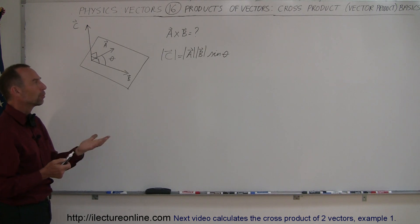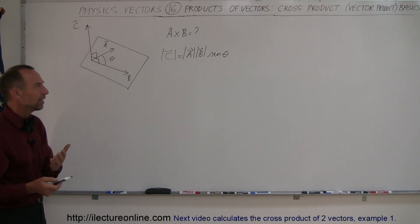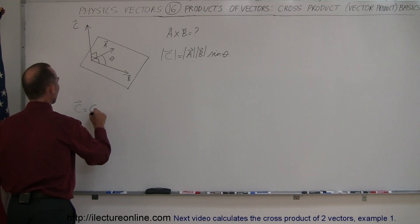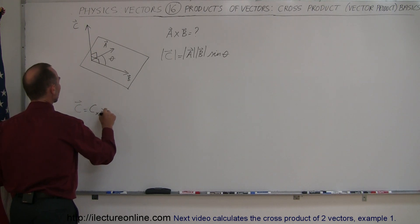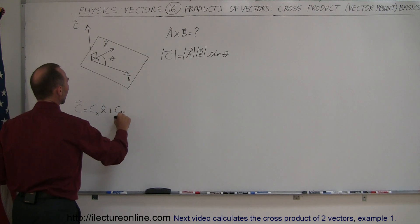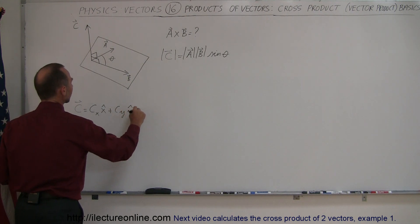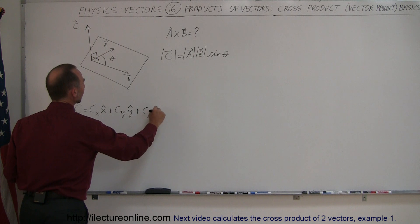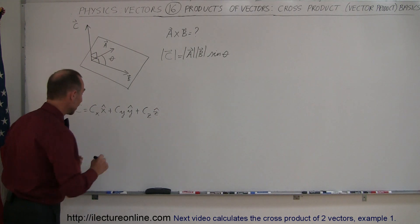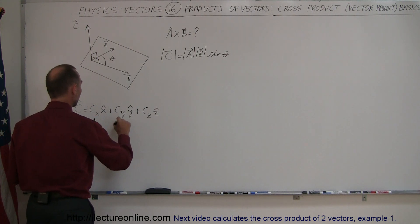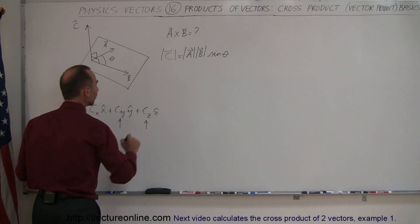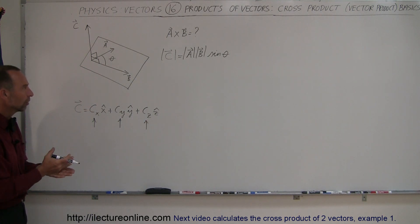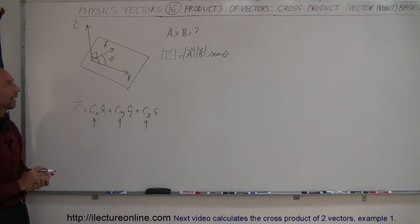Now, what about the components of vector C? Vector C equals C sub X in the X direction, plus C sub Y in the Y direction, plus C sub Z in the Z direction. The question becomes: how do you find the X, Y, and Z components of vector C — the resultant of the cross product of A times B?